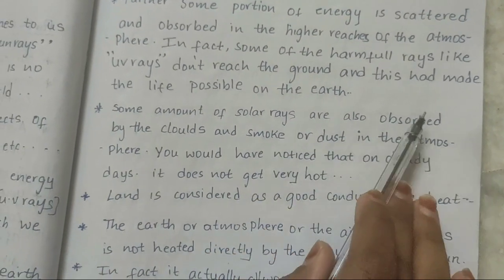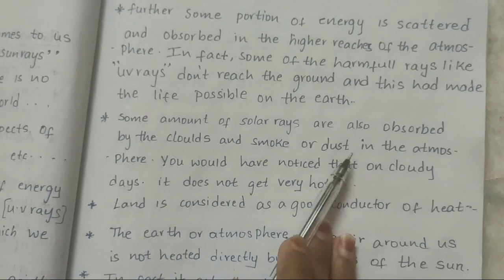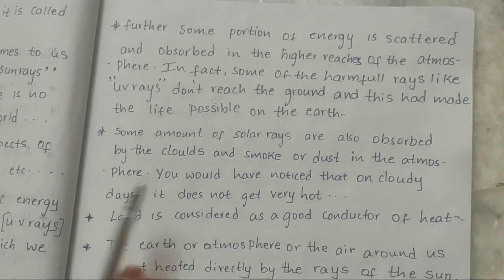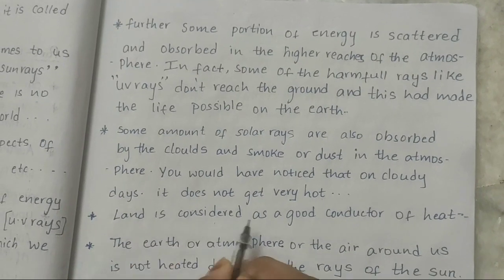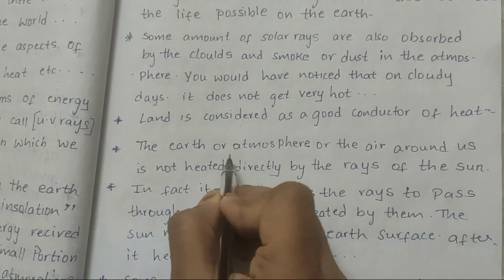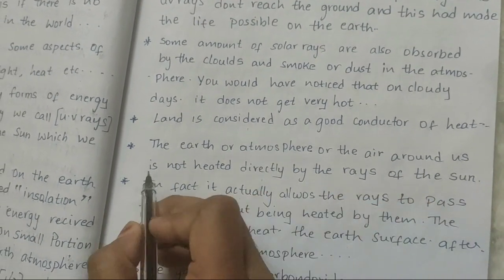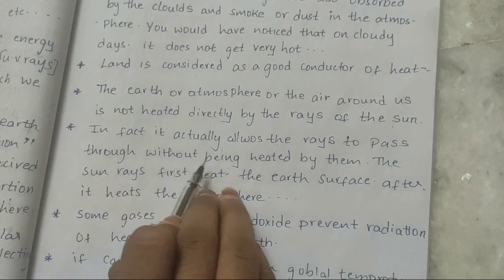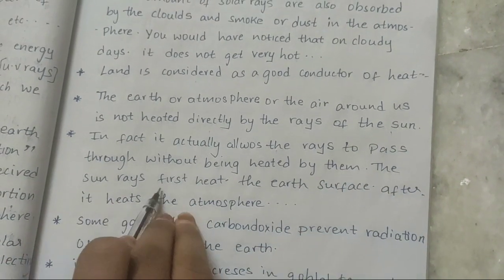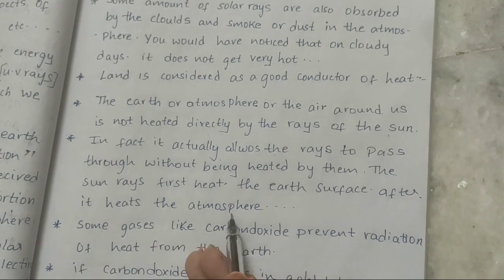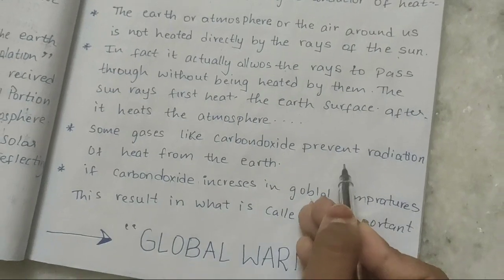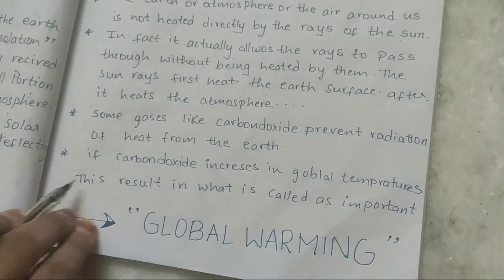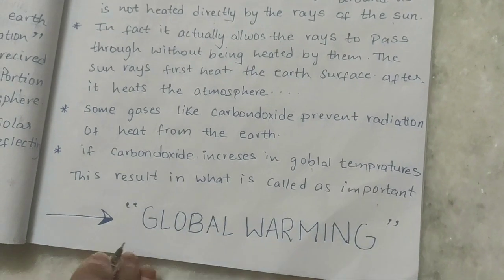Some amount of solar rays are also absorbed by clouds and smoke or dust in the atmosphere. You would have noticed that on cloudy days it does not get very hot. Land is considered a good conductor of heat. The Earth's atmosphere, or the air around us, is not heated directly by the rays of the Sun — it actually allows the rays to pass through without being heated by them. The Sun's rays first heat the Earth's surface, and after that it heats the atmosphere. Some gases like carbon dioxide prevent the radiation of heat from the Earth. If carbon dioxide increases in the atmosphere, global temperatures rise, resulting in what is called global warming.